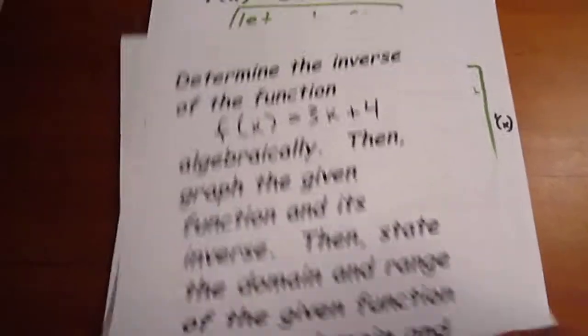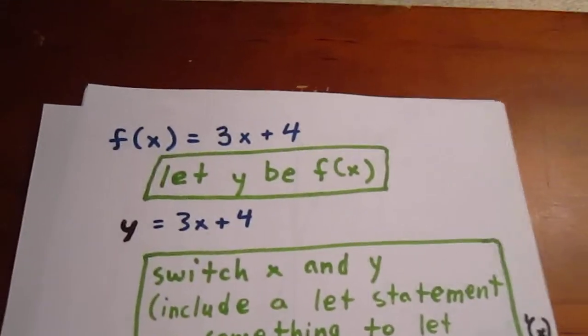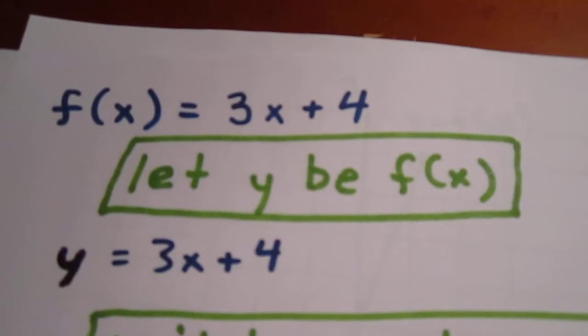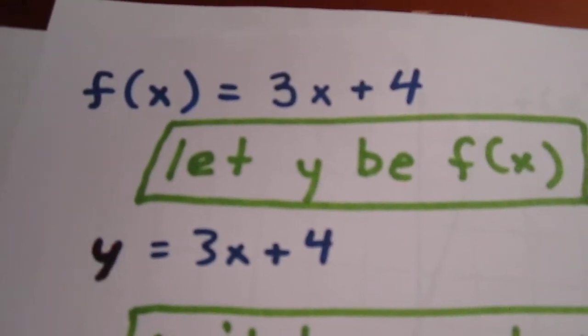So, the original function is f of x equals 3x plus 4. The first thing we do is we let y be f of x, so now y is 3x plus 4.